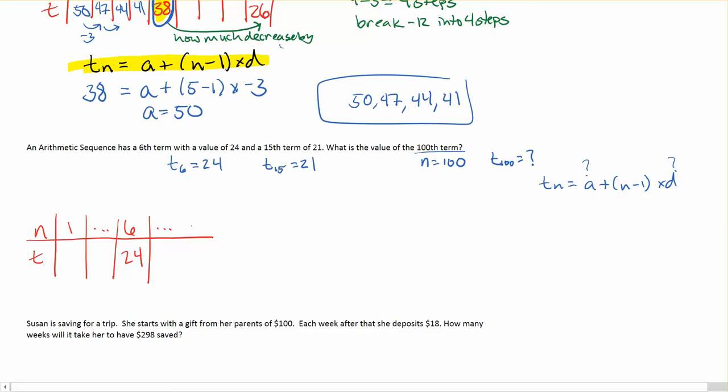Now, one way that I can do this is, again, think about a diagram for myself, and try to figure out what that d is. So n on top, t on bottom. Don't know what a is. I'm not going to write everything out. I'm just going to say, that's the 6th term, I know that's 24. And up to the 15th term, I know that's 21. And looking at this again, I know it's going to be a negative d, because it's decreasing.